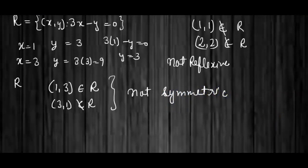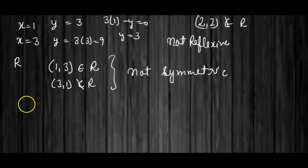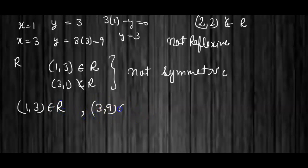Next, for transitivity: (1,3) belongs to R and (3,9) belongs to R.